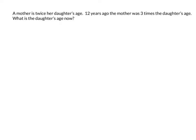Here's the problem I have as an example. It says: a mother is twice her daughter's age. Twelve years ago, the mother was three times the daughter's age. What is the daughter's age now?